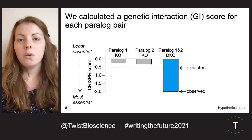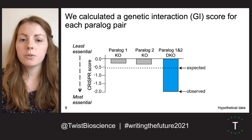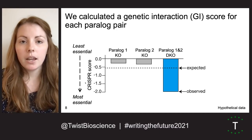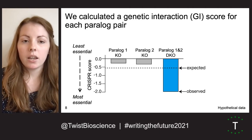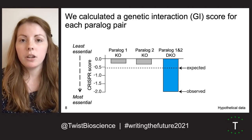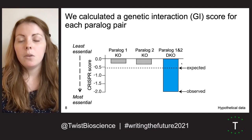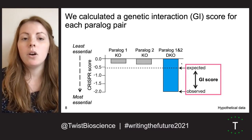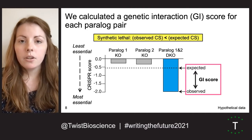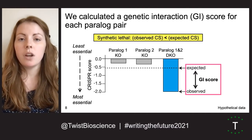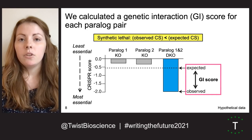From the CRISPR screen data, we can quantify the effects of each single or double gene knockout. A low CRISPR score indicates that a given knockout negatively affects cell growth, and we use this information to measure genetic interactions. We first generate a null model of no interaction by simply summing the two single knockout growth effects, and then we compare this to the observed double knockout growth effect to calculate a genetic interaction or GI score. For synthetic lethal interactions, the observed genetic interaction score from the double knockout will be less than the expected score, generating a negative GI score.